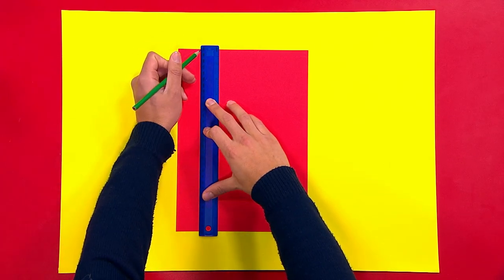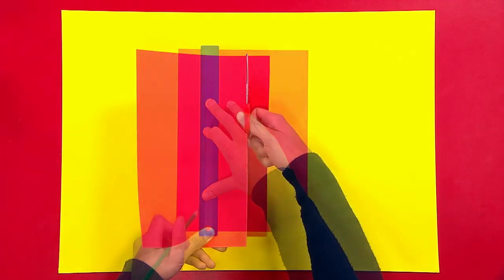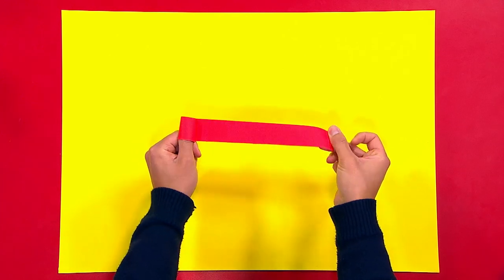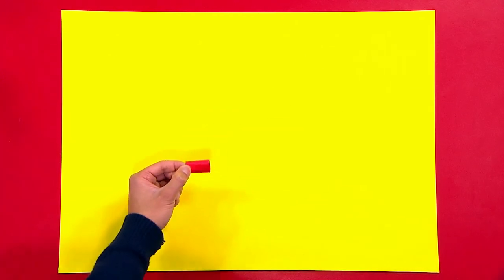First, using your ruler, draw a line on the piece of red card and then cut it out. Wrap the strip of card around your thumb and get a grown up to cut it to size. Then tape it around your thumb.